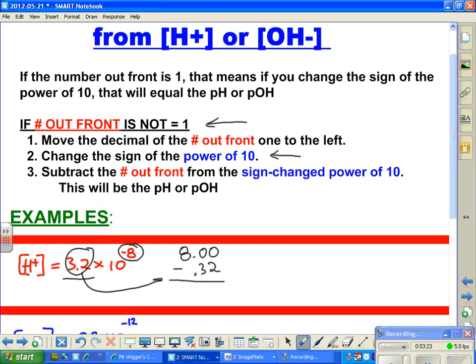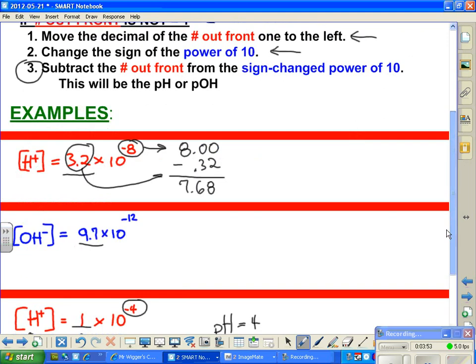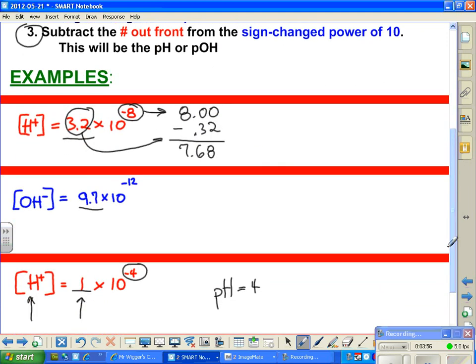Okay, so change the sign of the power of 10. Did that. We moved this guy. Now the last thing we have to do is number 3 here, and now we subtract the number out front from the sign-changed power of 10. The sign-changed power of 10 was a minus 8 going to a plus 8. And the sign-changed number out front is a minus 0.32. So we have 7.68, and that is equal to what? That's the pH.